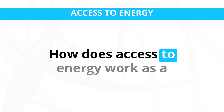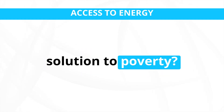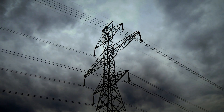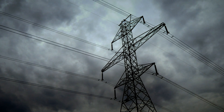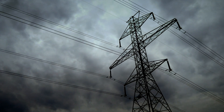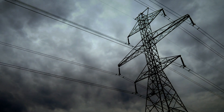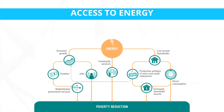How does access to energy work as a solution to poverty? Step 1: Infrastructure development — implementing energy projects such as building power grids or distributing solar panels to reach underserved communities. Step 2: Affordability and financing — ensuring energy services are affordable for impoverished communities through subsidies, microfinance, or pay-as-you-go models.